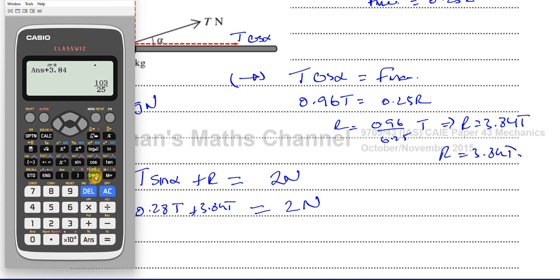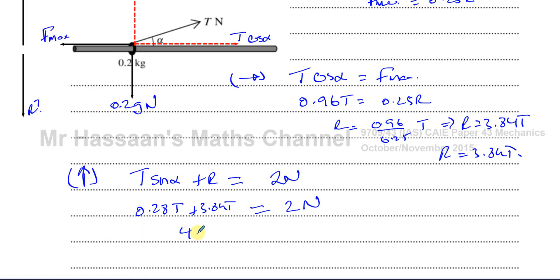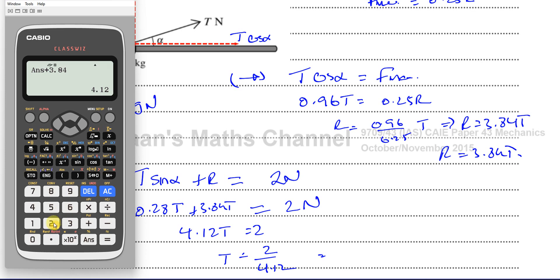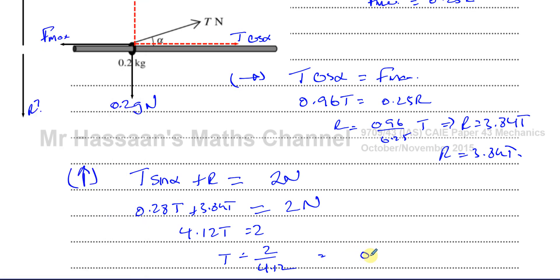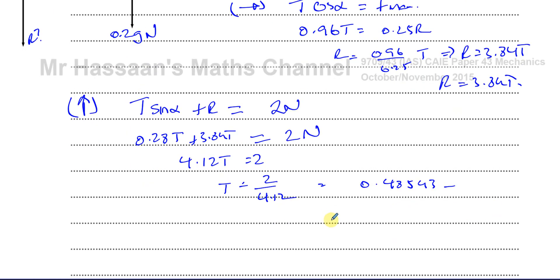So that's going to give me 0.28 plus 3.84, that's going to give me 4.12 T equals two newtons. So T equals two divided by 4.12. So T is equal to 50 over 103, which is 0.4854 continuing. Therefore, we can say the tension to three significant figures is 0.485 newtons.